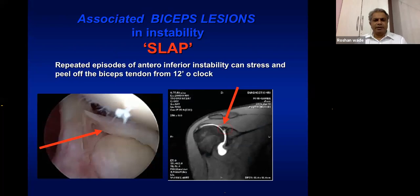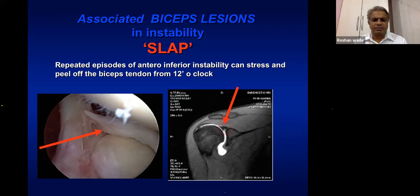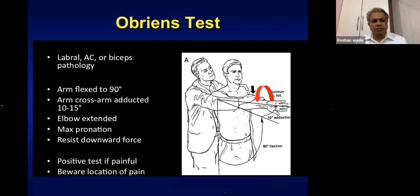Associated lesions commonly seen in instability include SLAP tears. The bicep tendon is an important dynamic stabilizer attached at the supraglenoid tubercle, and instability can occur when SLAP tears are not detectable on MRI or clinical examination. SLAP is a controversial entity nowadays — unless the tear extends into the bicep labral complex. O'Brien's test, with the arm at 90-degree flexion and cross-arm adduction, can detect labral pathology, though it is also positive in bicep tendinitis and AC joint injuries.